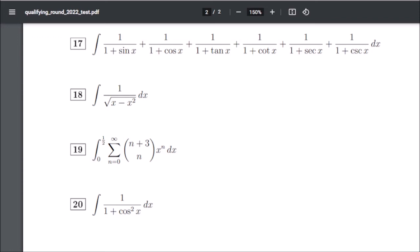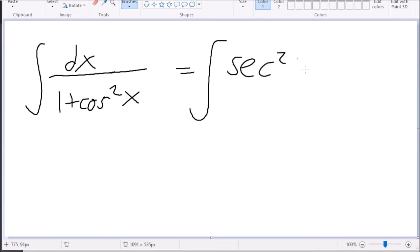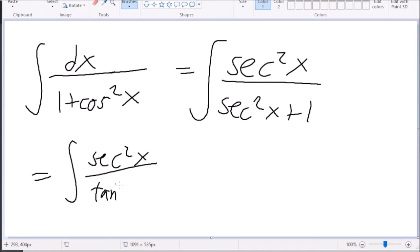Number 20 is dx over one plus cosine squared x. My first thought was Weierstrass and I was like oh god, let's avoid Weierstrass. I'm thinking about just doing secant squared and then you can rewrite this one. This gives me secant squared over tangent squared plus two.